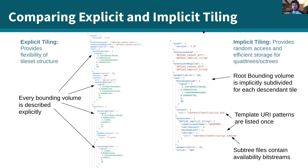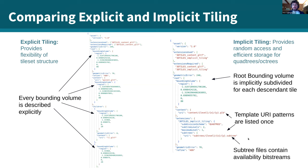To compare implicit and explicit tiling: explicit tiling is very flexible — you list each bounding volume and divide space however is useful for your application. Implicit tiling is quadtree or octree based and much more compact — you declare one bounding volume and use template URI patterns for contents, using level, X, Y, and Z coordinates to select tiles. Which tiles exist is indicated by bits stored in subtree files, which are also addressed by similar patterns.